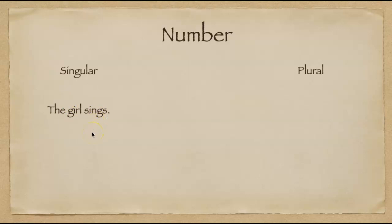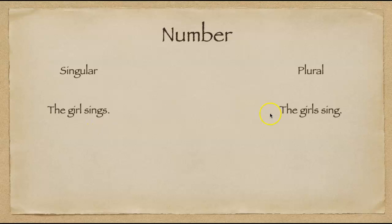An example of this with plural would be the girls sing. Again, notice that is a common mistake that people say this is a singular verb. This is not. This is a plural verb and it matches the plural subject. They're both plural. We have subject verb agreement.